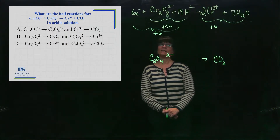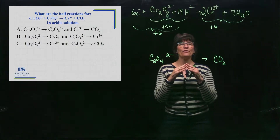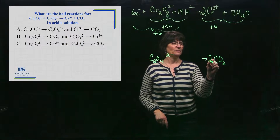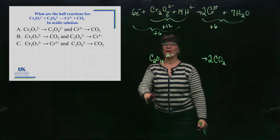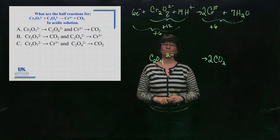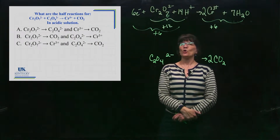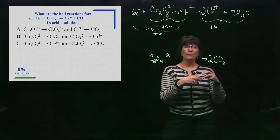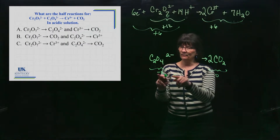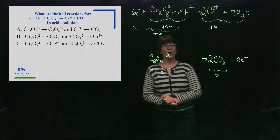Now the first half-reaction is balanced. For the second half-reaction, balance elements other than oxygen and hydrogen first — that's carbon. There are two carbons on the left and one on the right, so put a coefficient of two. Now balance oxygen: there are four oxygens on the left and two times two is four oxygens on the right, so oxygen is already balanced. Now balance the charge: the left is minus two, the right is zero. I add two electrons to the right.